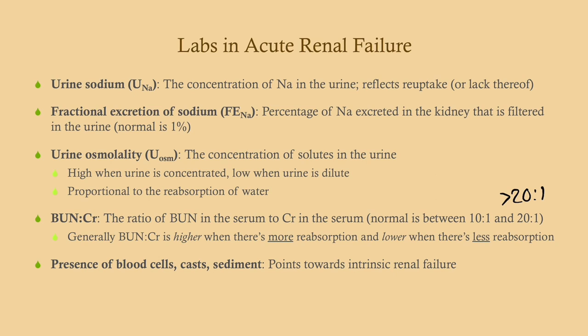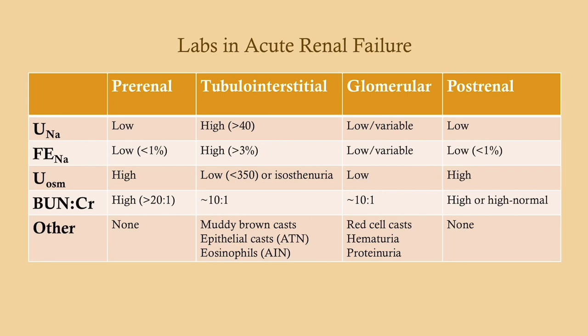The BUN-to-creatinine ratio is very useful for identifying pre-renal failure. In pre-renal failure, the ratio is greater than 20:1, because BUN is reabsorbed at a much faster rate than creatinine builds up. The presence of blood cells, casts, and sediment in the urine usually points to intrinsic renal failure — red blood cells, white blood cells, hemoglobin, myoglobin — things getting into the urine that shouldn't be there.